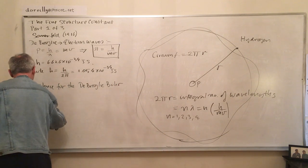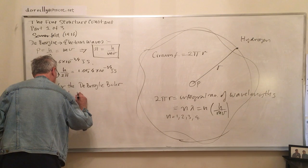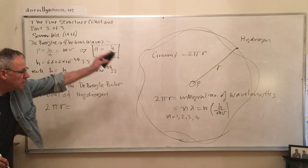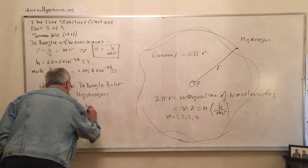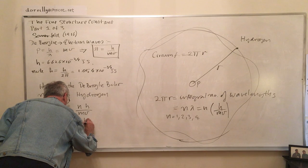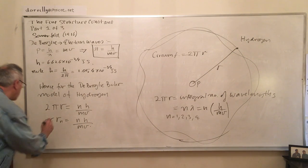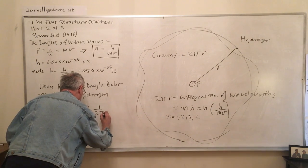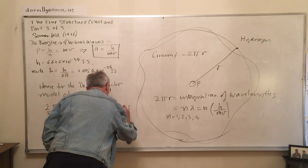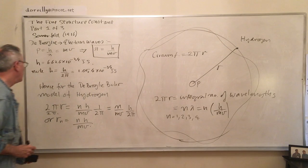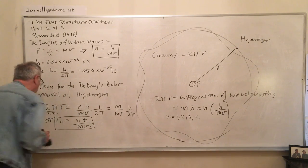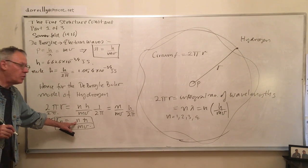The circumference of the orbit of the electron is given by an integral number of h over mv's. Let's divide both sides by 2 pi. Here I say that h over 2 pi is the reduced Planck's constant. Let me put that in here. So I can have different radii, r_n, for n equals 1, 2, 3, 4, 5, and so on.